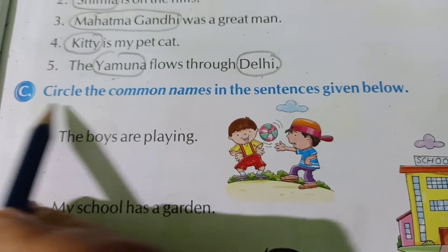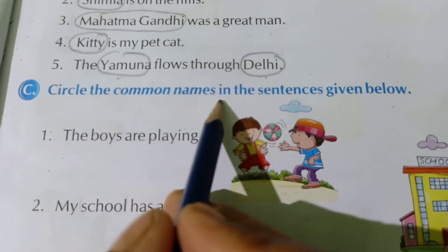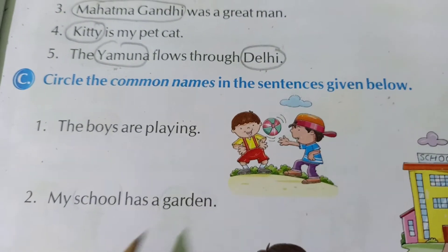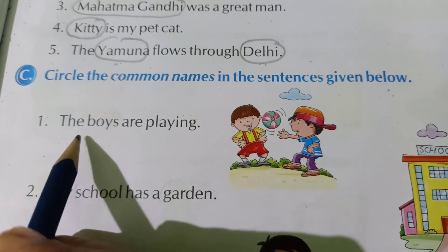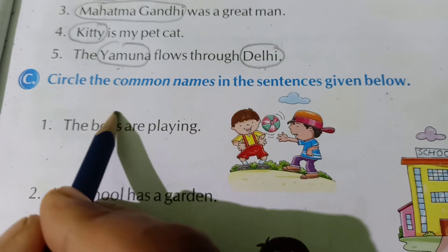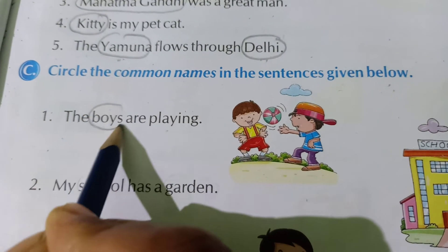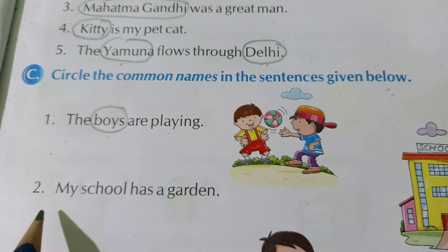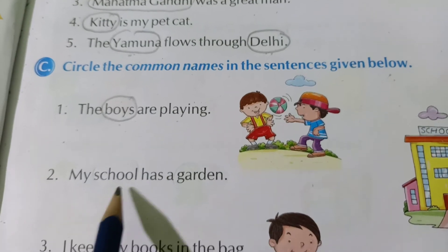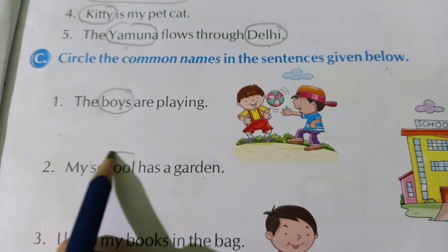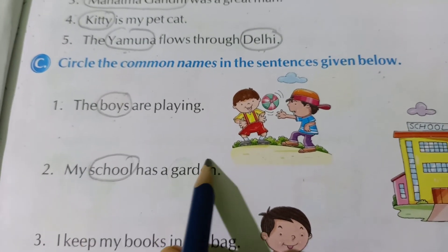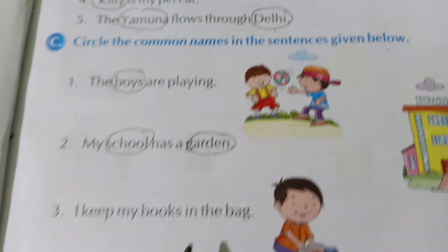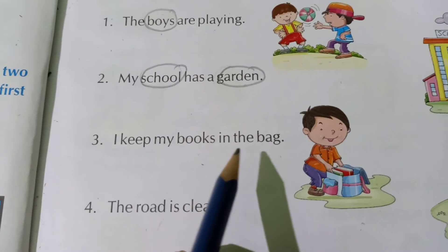Now, Exercise C: circle the common names in the sentences given below. We have to circle common names. One: The boys are playing — here 'boys' is a common name, so circle it. Two: My school has a garden — 'school' and 'garden' are common names, so circle them.